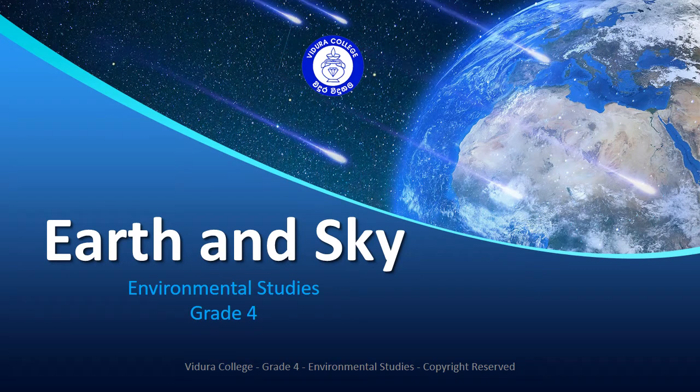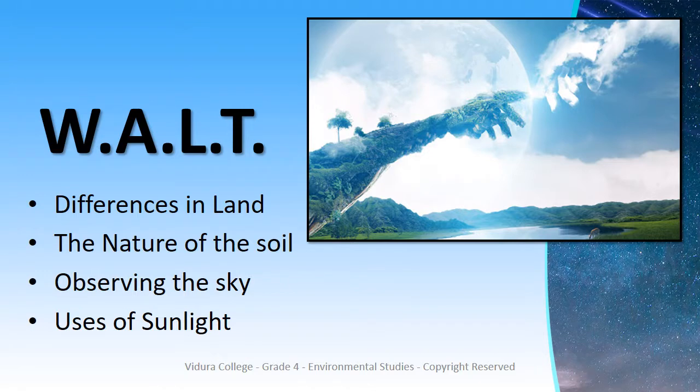Hello, my dear children. I'm your teacher from Grade 4. Today we are going to learn the first part of the Earth and Sky lesson. We are going to learn about differences in land, the nature of soil, observation of the sky on a rainy day and a sunny day, and uses of sunlight.